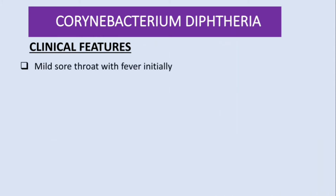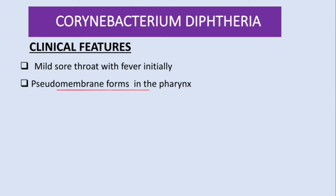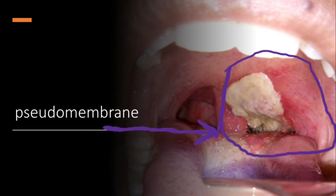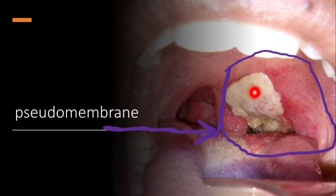Clinical features begin with a mild sore throat with fever. Then, very importantly, pseudomembrane forms in the pharynx. As you can see in the image, this pseudomembrane can block the airway, leading to suffocation, and can also cause dysphagia. If you remove this pseudomembrane it can lead to massive bleeding, and the exotoxin will spread quickly.